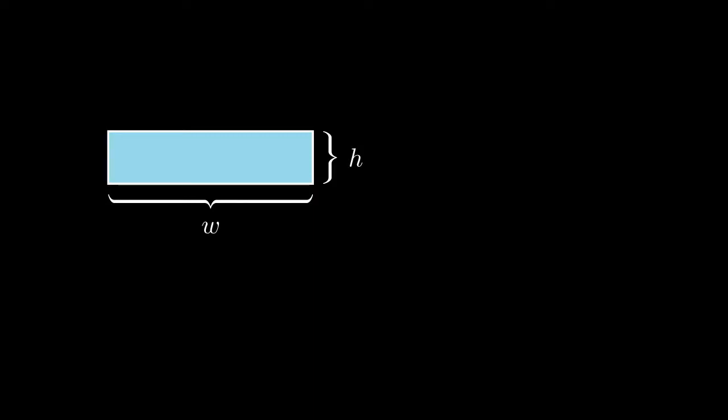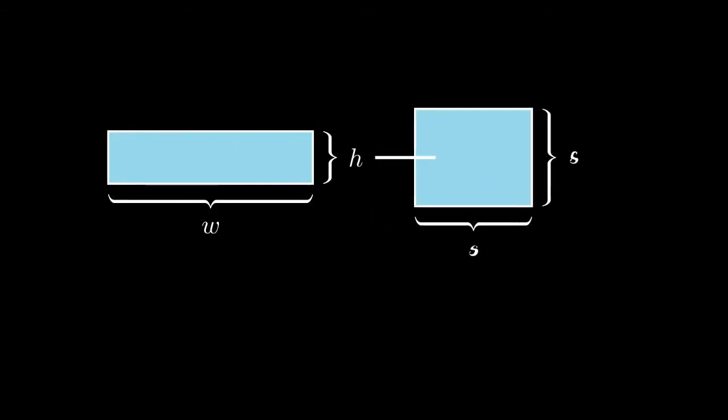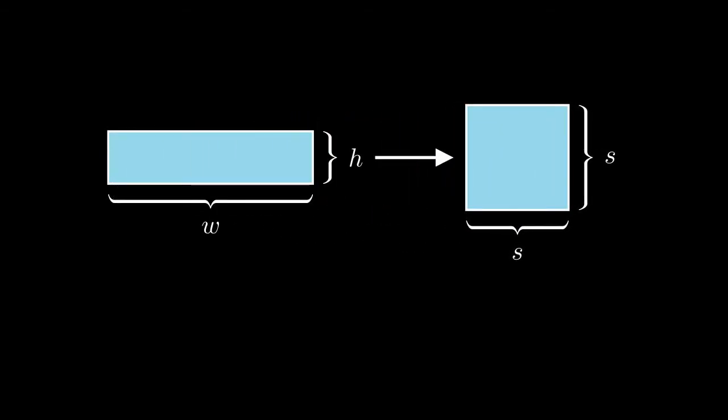To visually represent this, let's take a look at a rectangle. To find the formula for the geometric mean, we would have to solve for the side length of the square that has the same area as the rectangle. So we get that s is equal to the square root of the product of the width and height of the rectangle. This formula can be generalized as the function gm that takes in two inputs and spits out a number.